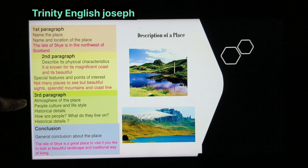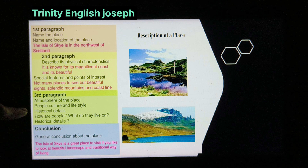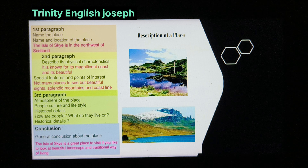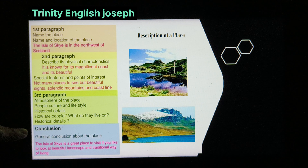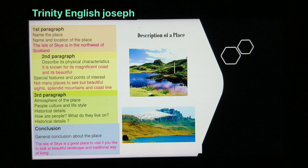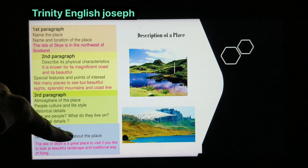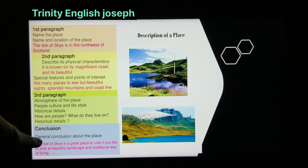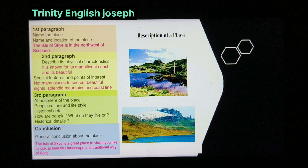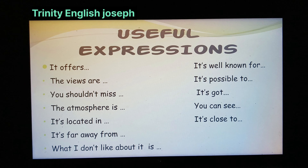If you look at the third paragraph, friends — we speak about the atmosphere of the place: people, culture, and the lifestyle, and then historical details — how people live and other historical things. After all these things, finally, we make a general conclusion about the place. For example: 'The Isle of Skye is a great place to visit if you like to look at beautiful landscape and traditional way of living.' That is the general conclusion.